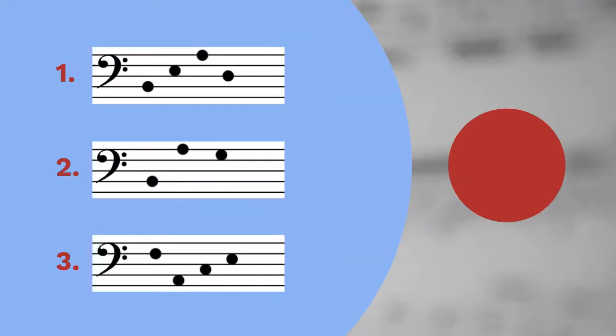Just like the treble clef exercises, each of these spells out a word. Can you name each note and figure out the hidden word? Remember, the line running through the two dots of the bass clef is an F. Stepping down from the F, the notes are E, D, C, etc. Pause the video and take as much time as you need. When you come back, we'll go over the answers.